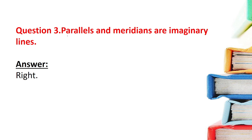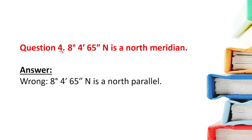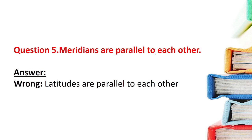Statement 3: Parallels and meridians are imaginary lines. This is correct. Statement 4: 8 degrees 4 minutes 65 seconds N is the north meridian. This is wrong — it is a north parallel, not a north meridian. Statement 5: Meridians are parallel to each other. This is wrong, because it is latitudes that are parallel to each other, not meridians.